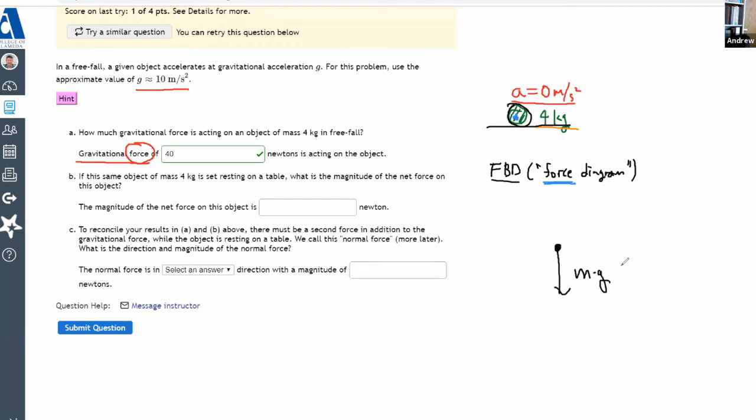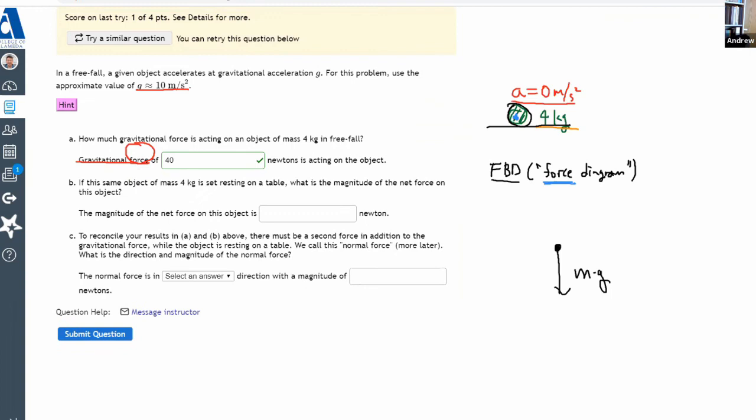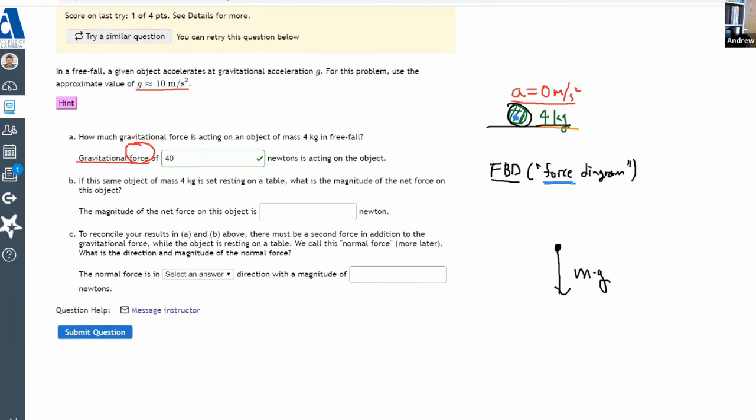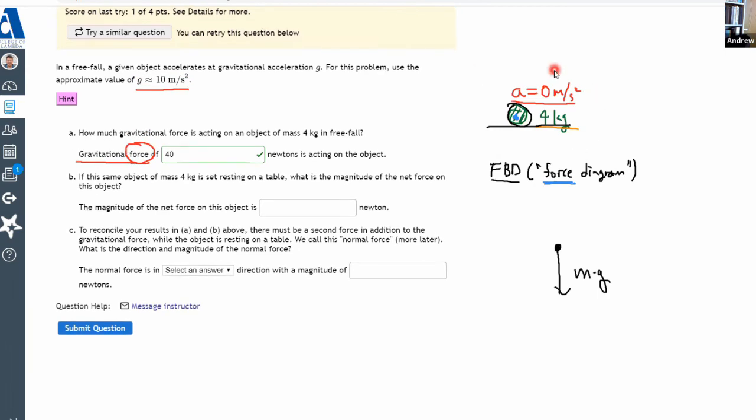If this is the only force, then there's an inconsistency here. The diagram you see here says that there should be downward acceleration. But the acceleration that you know says it should be zero. And that's what actually part C is getting at.